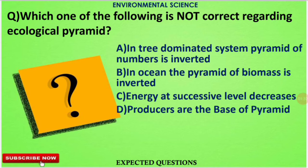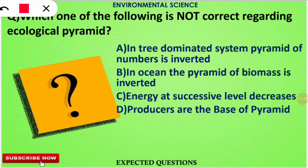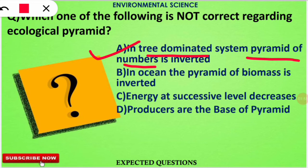The next question is: which one of the following is not correct regarding the ecological pyramid? Read the options carefully. The option which is not correct is option number A — in a tree-dominated system, the pyramid of number is not inverted; it is upright in nature.